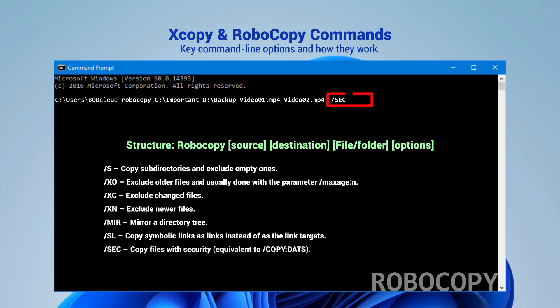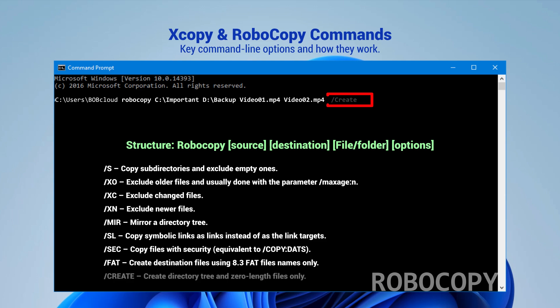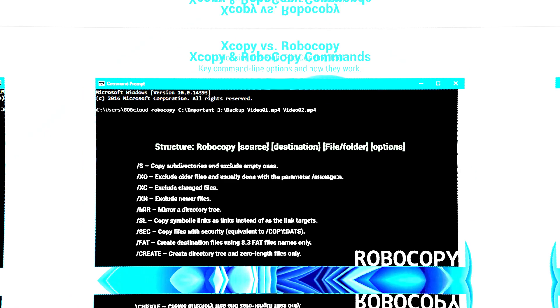/SEC: Copy files with security, which is equivalent to CopyDat:S. /FAT: Create destination files using 8.3 FAT file names only. /CREATE: Create directory tree and zero-length files only.